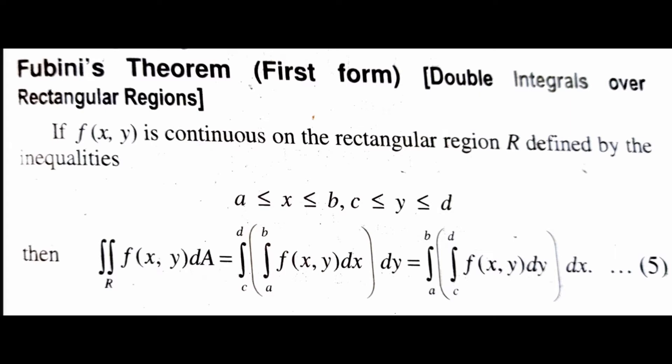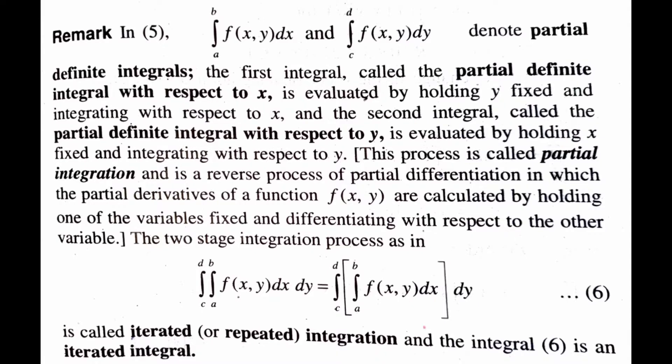This theorem is called Fubini's theorem. The integrals — integral a to b of F(x,y) dx and integral c to d of F(x,y) dy — denote partial definite integrals.